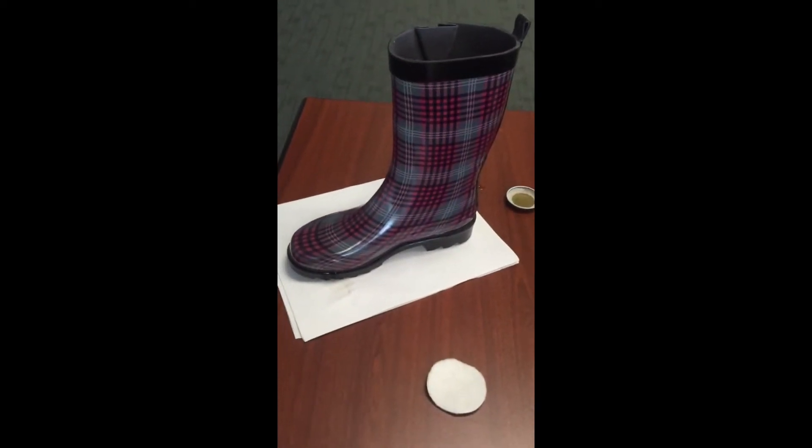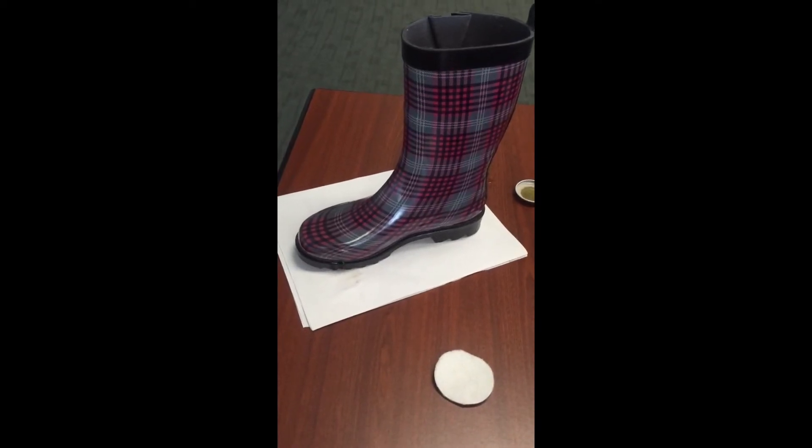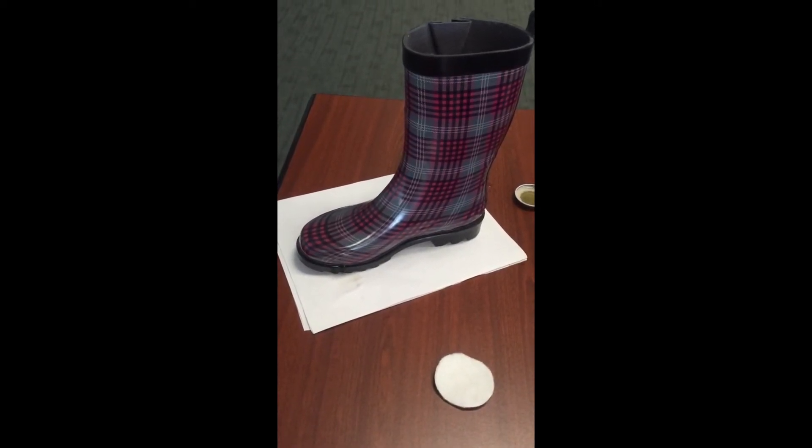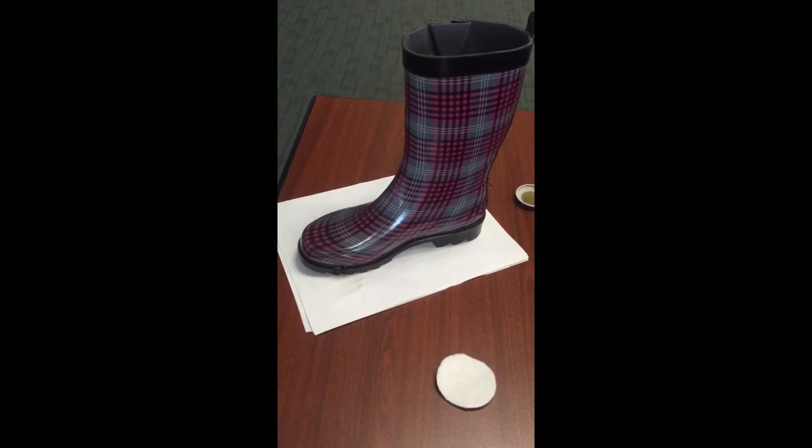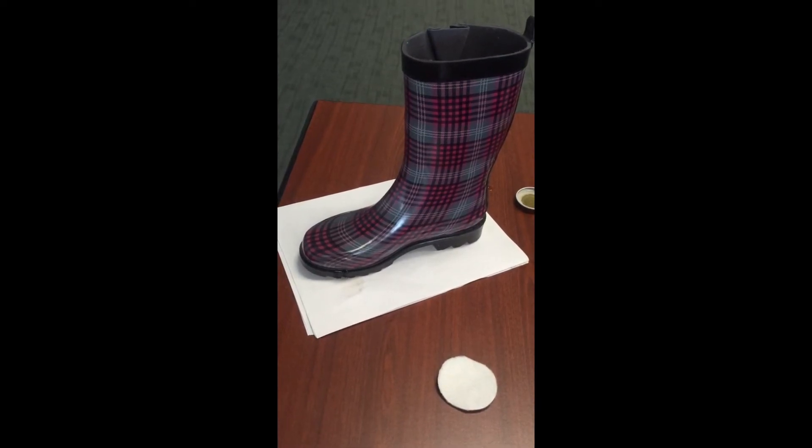We see with the rain boot that when the water was poured on it, the water rolled right off because it was unable to interact with the surface. Let's see what happens with the cotton swab.